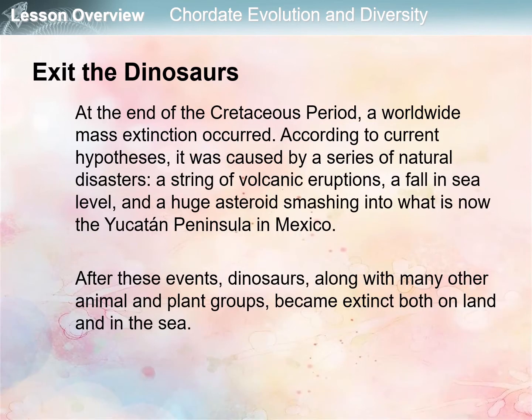At the end of the Cretaceous period, a worldwide mass extinction occurred. According to current hypothesis, it was caused by a series of natural disasters — possibly a string of volcanic eruptions, a fall in sea level, and a huge asteroid smashing into what is now the Yucatán Peninsula in Mexico. After these events, dinosaurs along with many other animal and plant groups became extinct, both on land and in the sea.